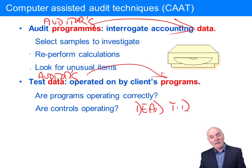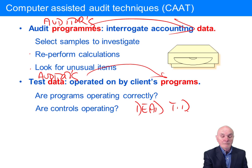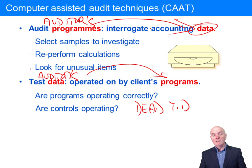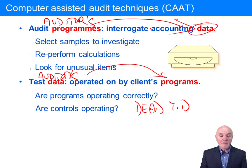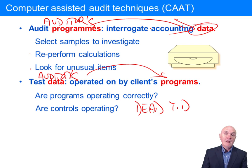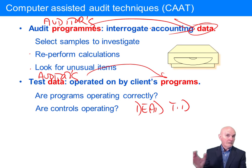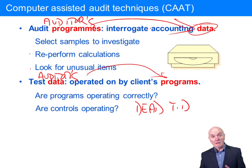Similarly, with audit programmes, quite often instead of running them against the real records of the company, the client gives you a copy of the records. They have to safeguard their records, and there's always a chance that some incompetent auditor, when running their audit programmes, manages to wipe all the client's records — and that won't make you very popular at all.